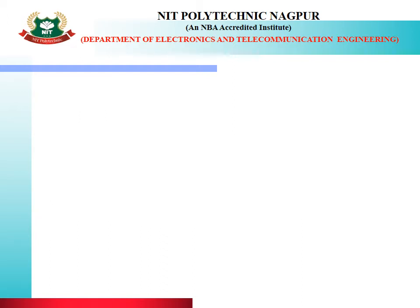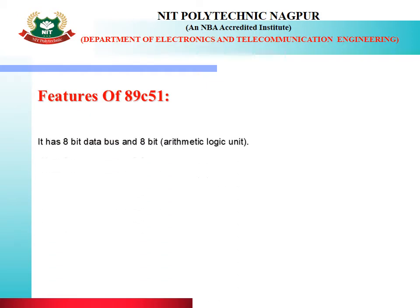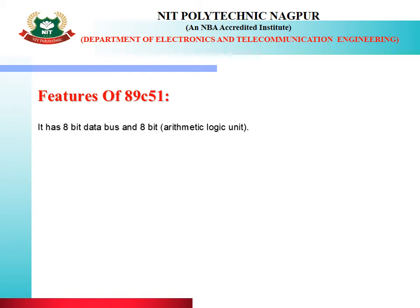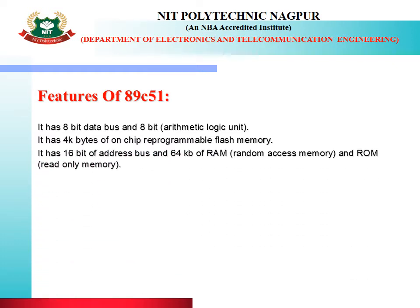In the next lecture, we will start with features of 89C51 microcontroller. In the features, it has an 8-bit data bus and 8-bit ALU, i.e., the arithmetic logic unit. It has 4K bytes of on-chip reprogrammable flash memory. It has a 16-bit address bus and 64 KB of RAM. All are aware with the address bus as well as the RAM.